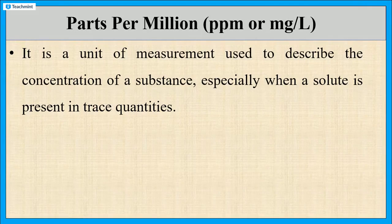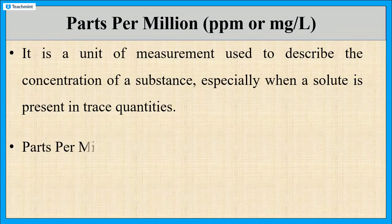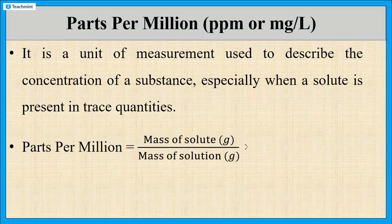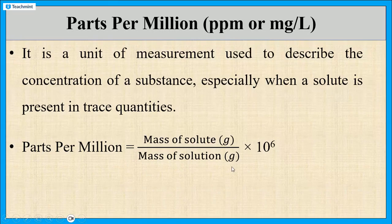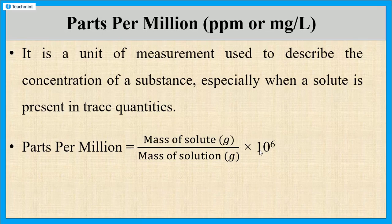It is commonly used in science to measure very small concentrations such as pollutants in air or chemicals in water. Parts per million or PPM can be calculated by using the formula: PPM equals mass of solute divided by mass of solution times 10 to the power 6.